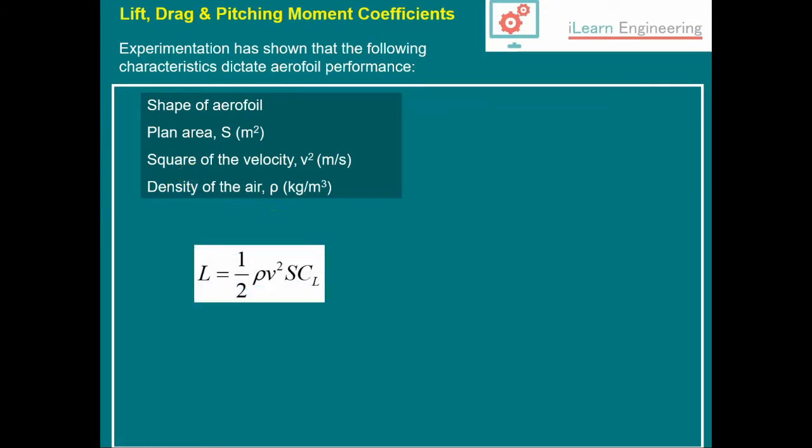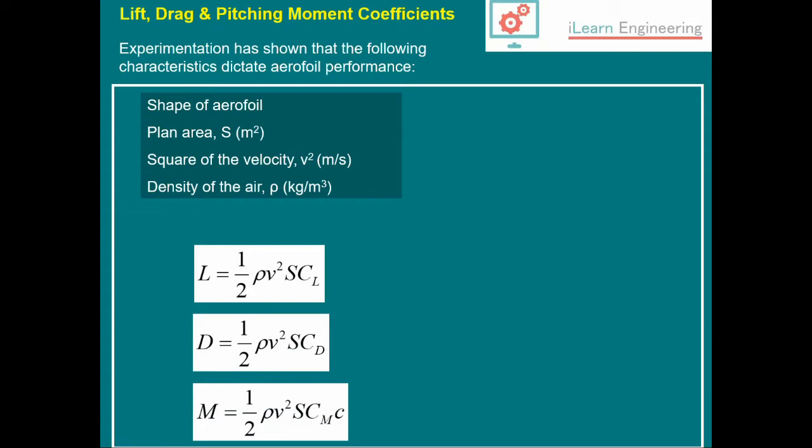This results in these common equations: lift equals one half rho v squared S CL, where CL is the lift coefficient. Similarly, drag equals one half rho v squared S CD, where CD is the drag coefficient, and we have an equivalent equation for the pitching moment.